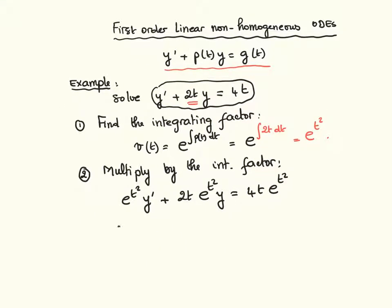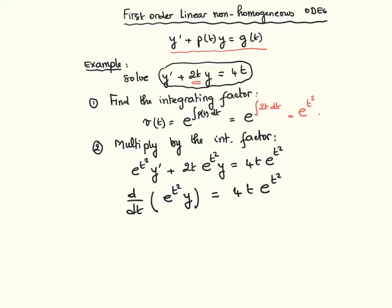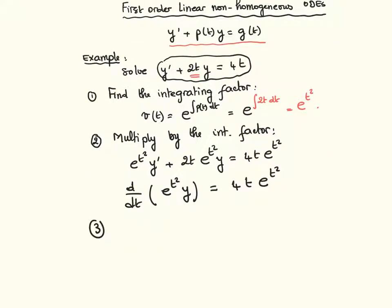And we then notice that actually the left-hand side is the derivative of e to the t squared y with respect to t. So we can write this equation in this form. So 4t e to the t squared like this. And then the next step is to integrate both sides. Integrate both sides with respect to t.